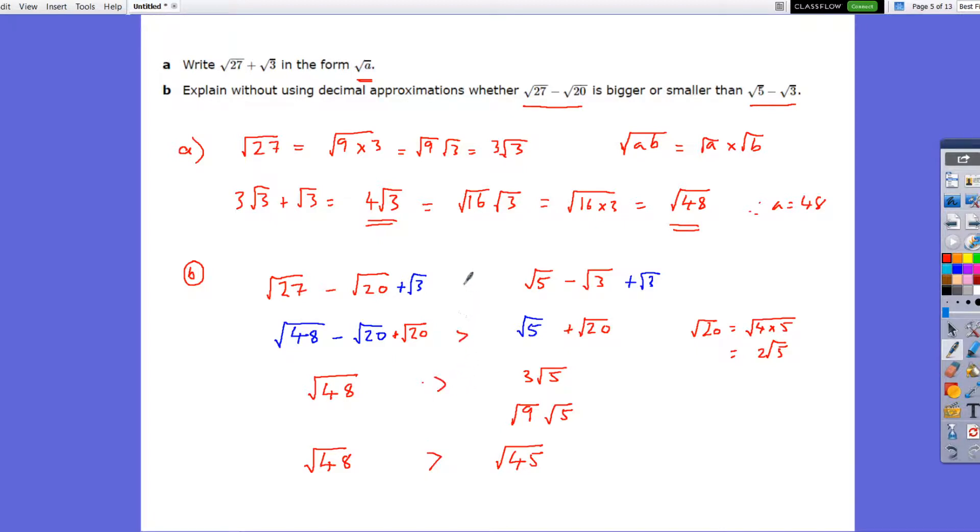So what ends up being is this side is greater than what's on this side, okay? That would have meant that root 27 minus root 20 is greater than, it's bigger than. So therefore, root 27 minus root 20 is bigger than root 5 minus root 3.